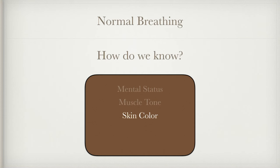We can look at skin color and something we look for is cyanosis — C-Y-A-N means blue. Like the cyan ink cartridge in a color printer. Cyanosis means blue coloring, and we most often see this in the nail beds and around the lips. Sometimes you'll see it around the eyes or under the eyelids, but typically the nail beds and lips are where we see it first.